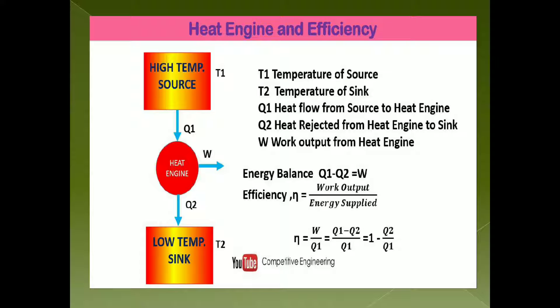Now we will see the thermal efficiency of a heat engine. Thermal efficiency is the ratio of net work done by it to the heat absorbed during one complete cycle of the heat engine. The symbol used to denote efficiency is eta. Consider a source of heat having high temperature T1. When it supplies heat to the sink, which has low temperature T2, the heat engine in the middle converts some heat into work, denoted as W.